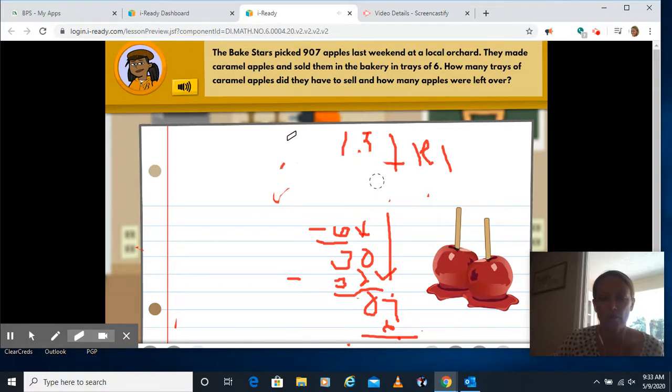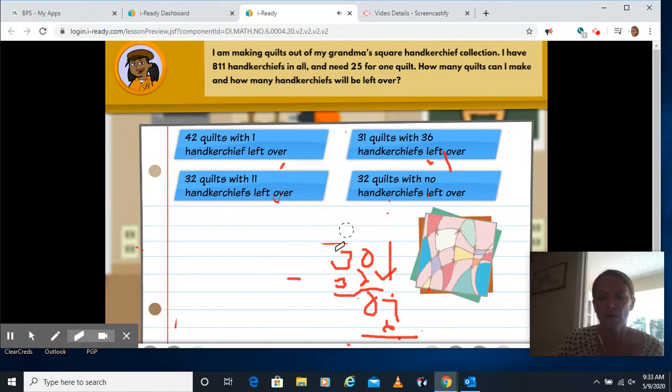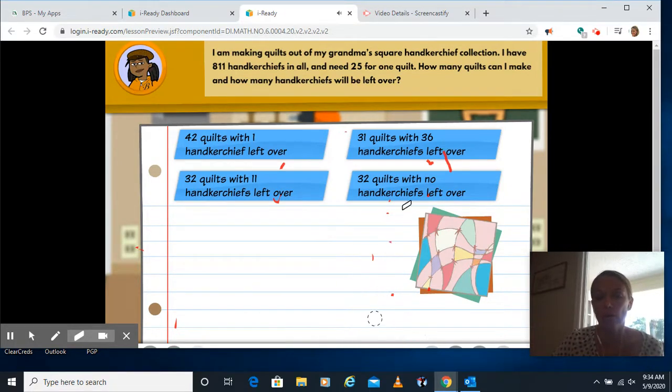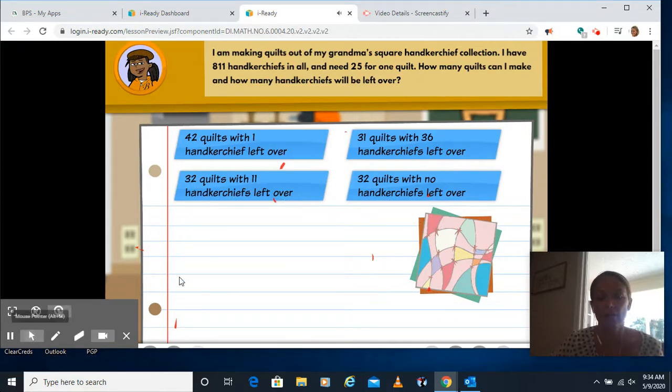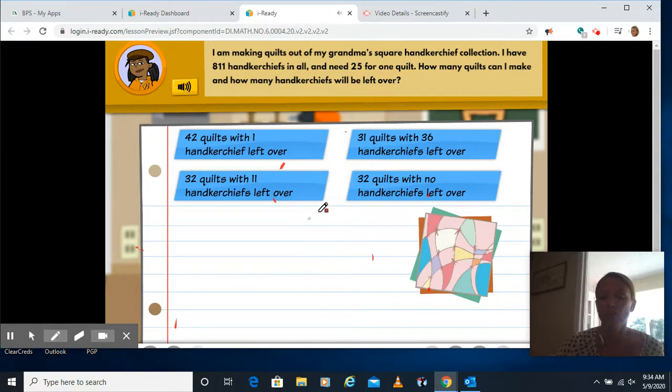The next one, we're doing the same thing. We're going to have to actually work it out and see how many and how many we have as a remainder. So it says, I'm making quilts out of my grandma's square handkerchief collection. I have 811 handkerchiefs in all and I need 25 for one quilt. How many quilts can I make and how many handkerchiefs will be left over?